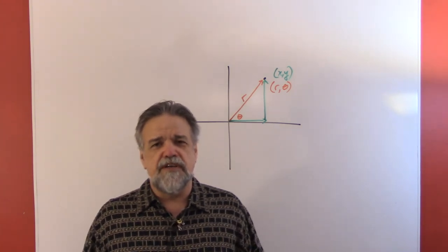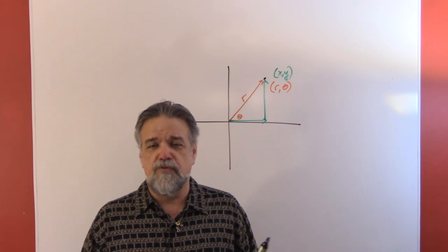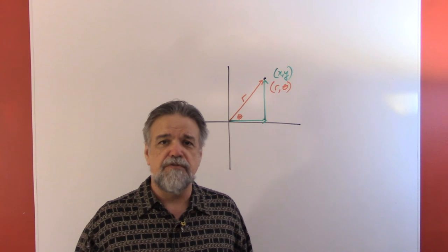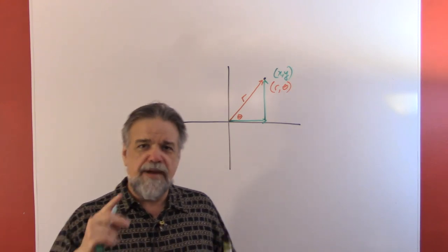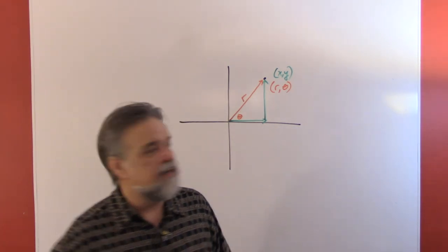Now what I want to look at today is how to go back and forth. Actually, in particular, I want to look at if you know the polar coordinates, how can you find the rectangular coordinates? So back when you were first studying trigonometry, you did some problems kind of like this.